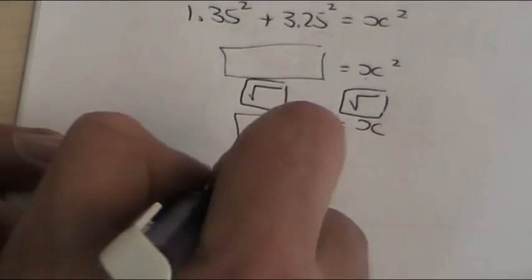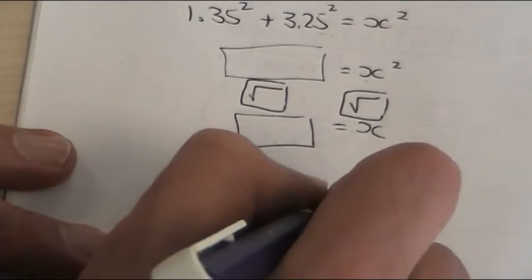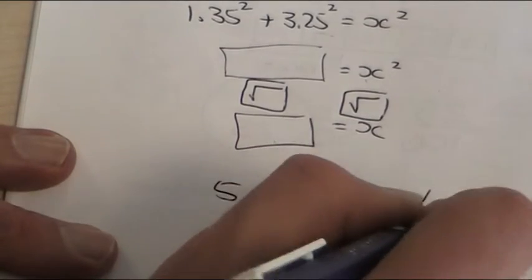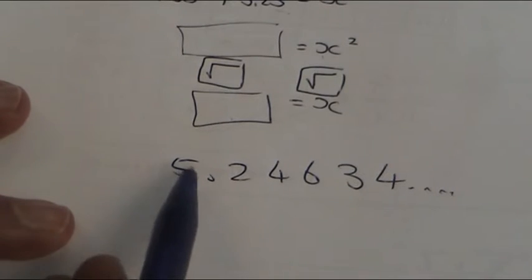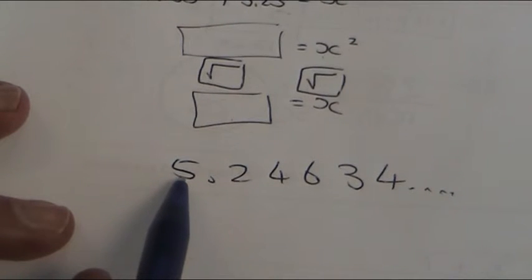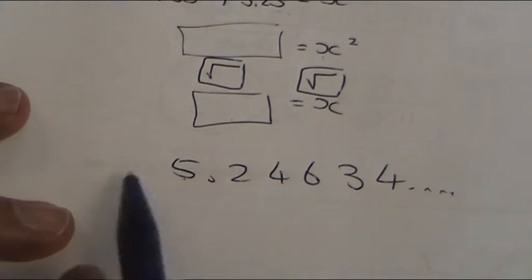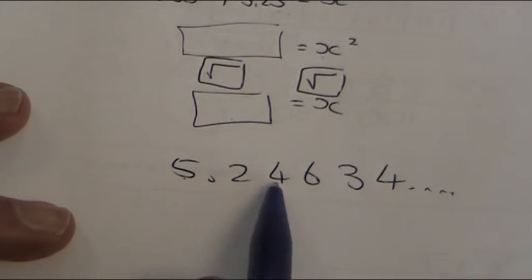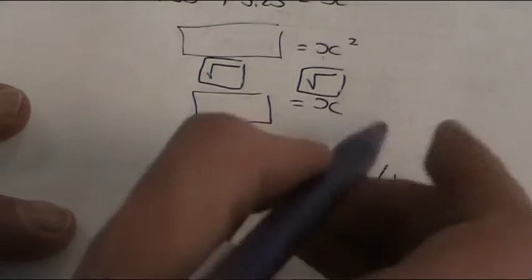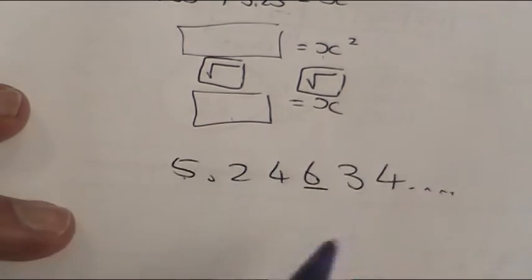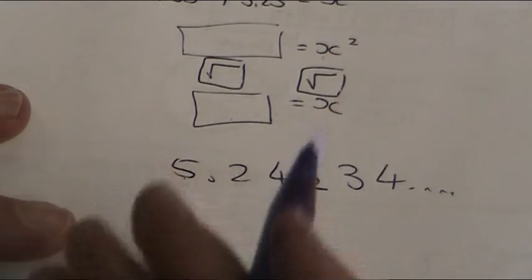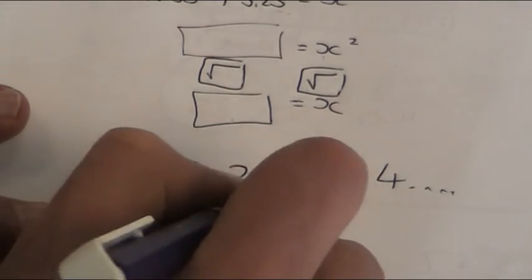So if it was something like 5.2463... and goes on and on. This is the first significant figure because it's between 1 and 9. This is the second, and this is the third. So if I'm rounding to three sig figs, I look at the next one, which is 6. It tells me to round this up to a 5, so that would be my answer.